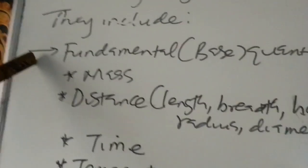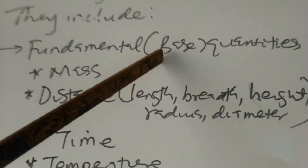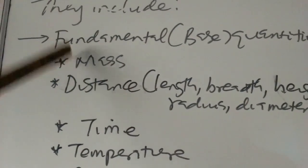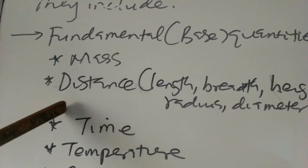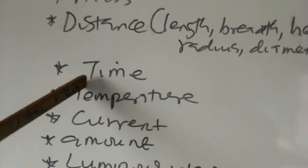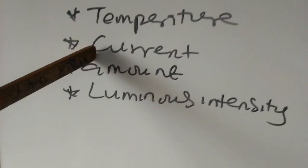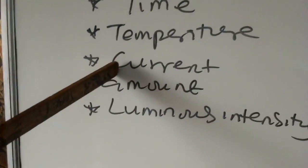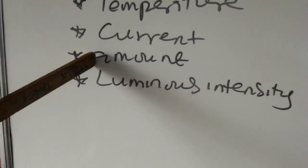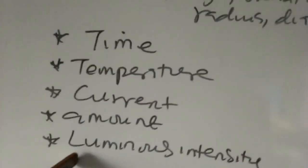Examples of scalar quantities: all fundamental or base quantities are scalar. These include mass, which is fundamental and scalar. Distance — and anything related to distance such as length, breadth, height, radius, and diameter — are all scalar. Time is fundamental and scalar. Temperature is fundamental and scalar. Current is scalar because it is the dot product of two vectors. Amount of substance is scalar, and luminous intensity is scalar. All seven fundamental quantities are scalars.